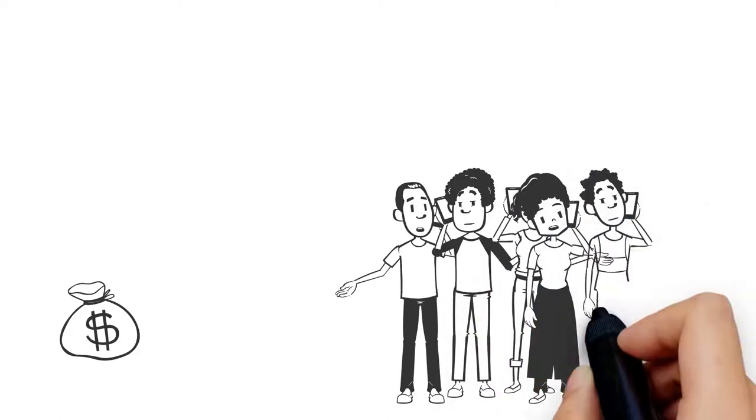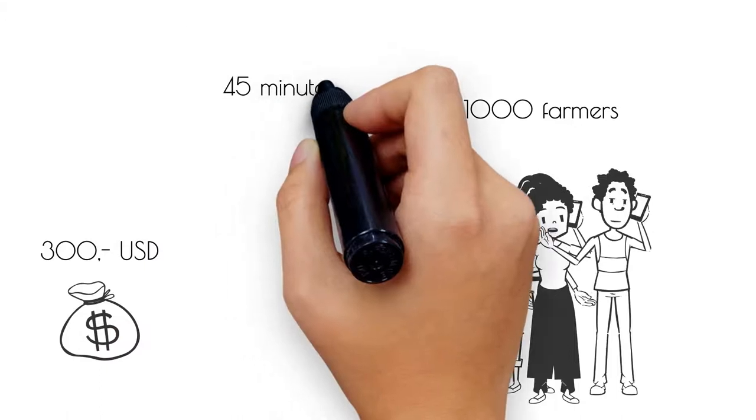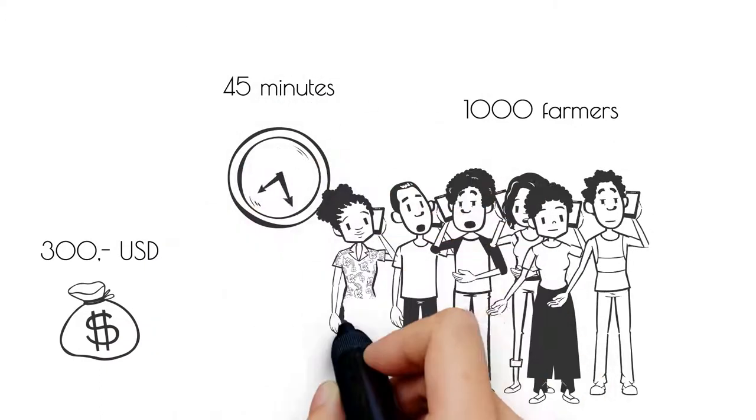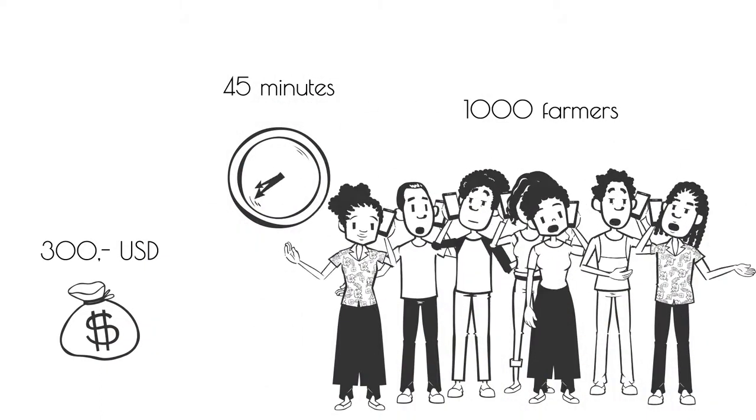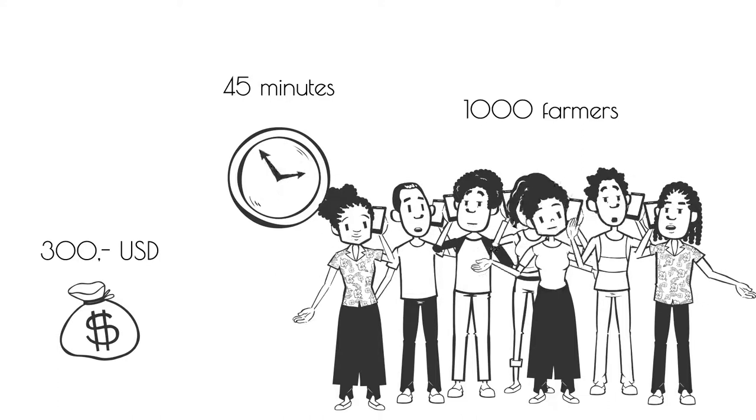For example, one 5Q survey round in the CSA project consulted nearly 1,000 farmers in the space of 45 minutes by automatic phone calls at an operational cost of just 300 USD.